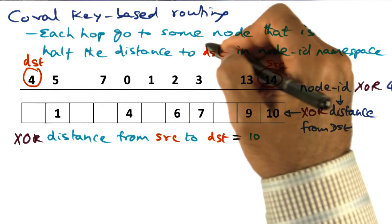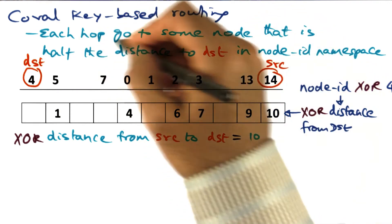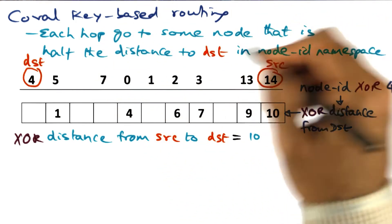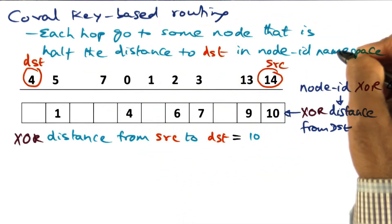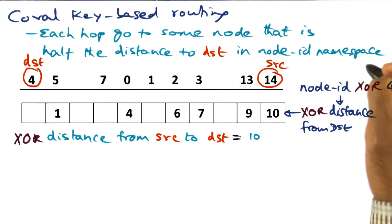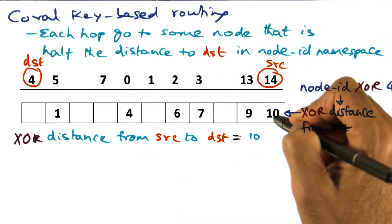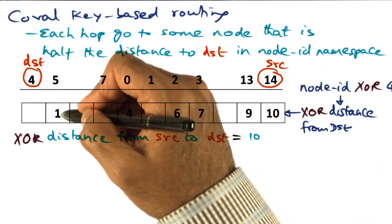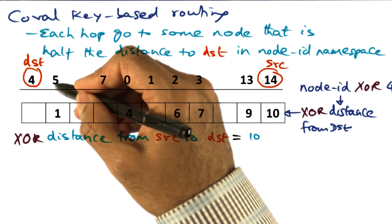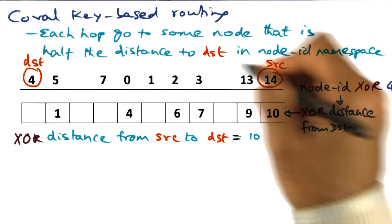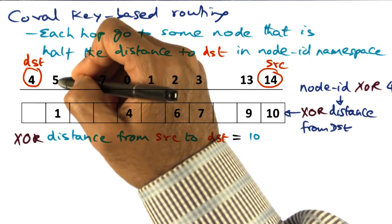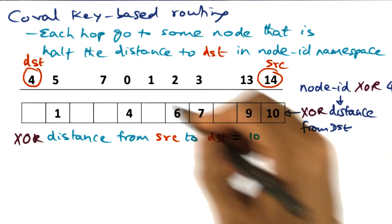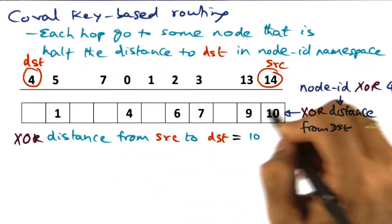In Coral, what we're going to do is, in each hop, go to some node that is half the distance to the destination in the node ID namespace. Recall in the greedy approach, since I have a way of getting to node 5, I directly went to him with the hope that he'll get me to my desired destination. Not so in Coral key-based routing.